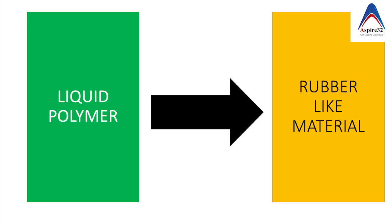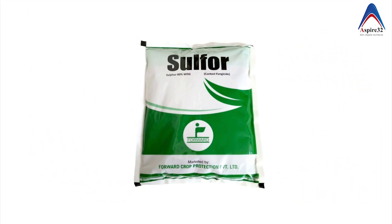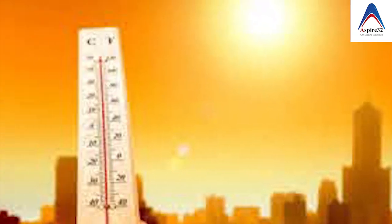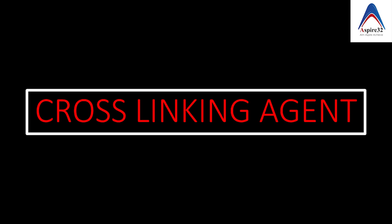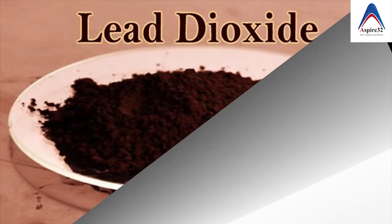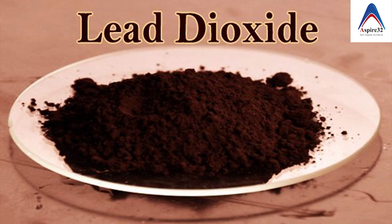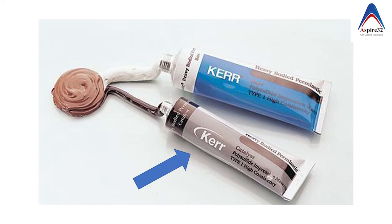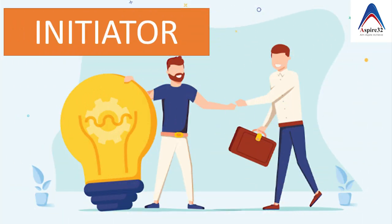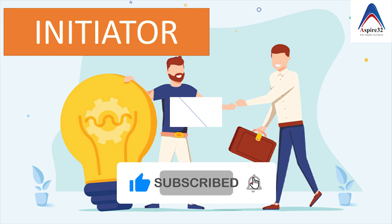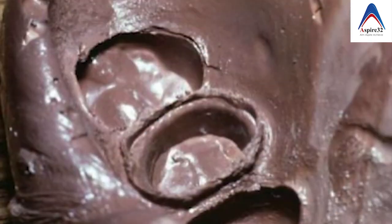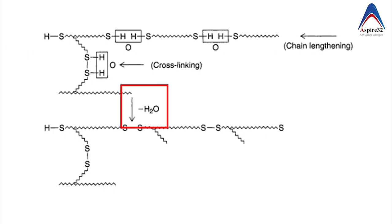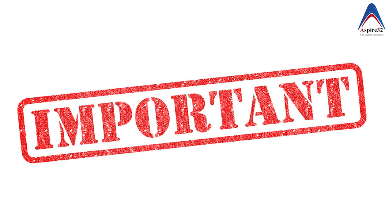To convert the liquid polymer to a rubber-like material, we add agents like sulfur, but sulfur only acts at very high temperatures. So to achieve conversion at room temperature, we add a cross-linking agent — that is lead dioxide — which is generally present in the catalyst paste tube. This is what gives the impression material its brown color. Lead dioxide acts as an initiator and oxidizes the terminal groups, converting the material to a thick rubber-like material. Importantly, the byproduct of this reaction is water, which you have to remember as it may be asked in the exam.